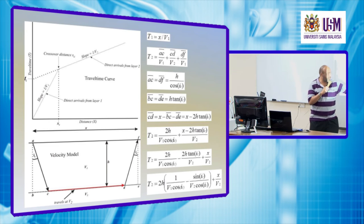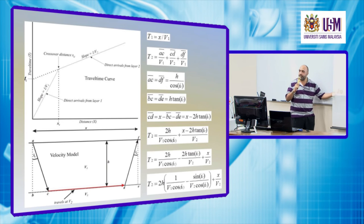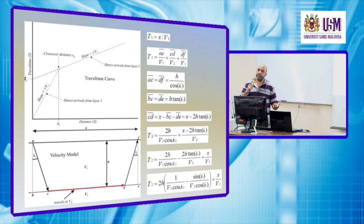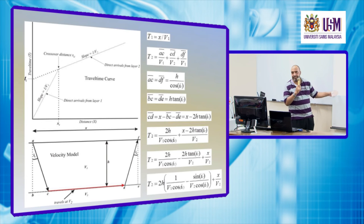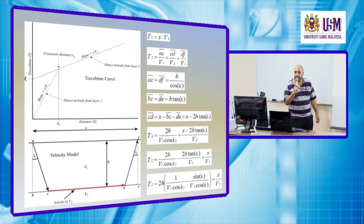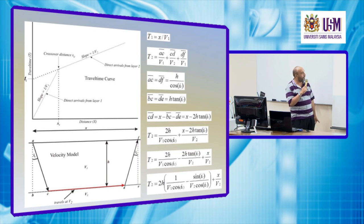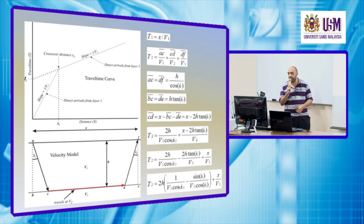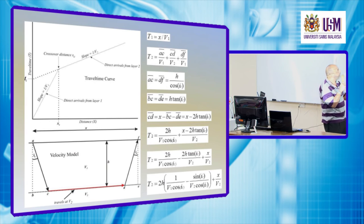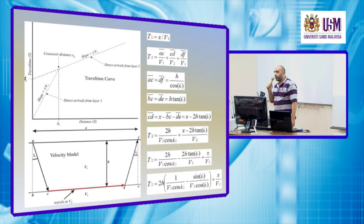We want to determine either BC or DE. The relation between BC, the angle IC, and H uses the tangent function — because tangent(IC) = BC / H — so BC = DE = H · tan(IC).